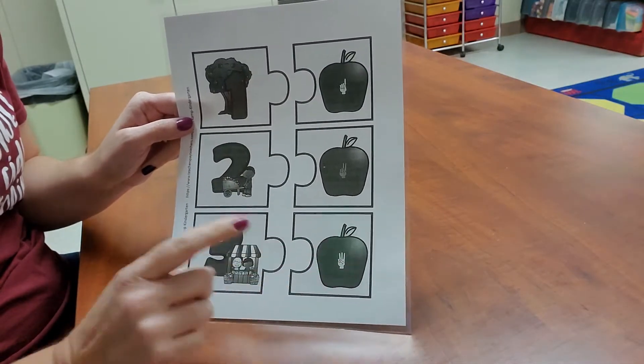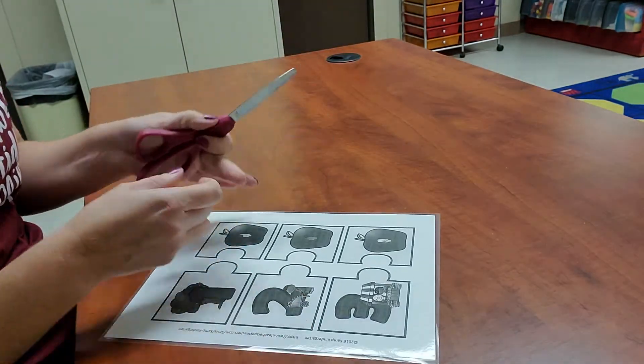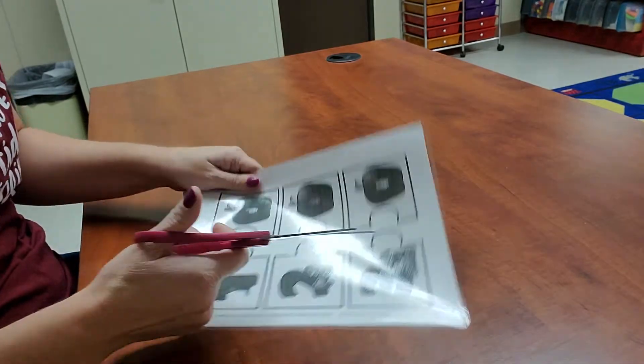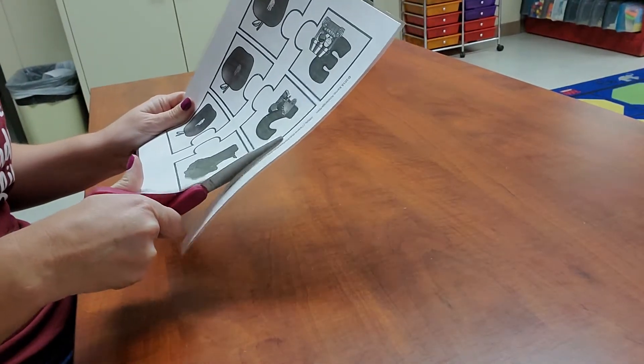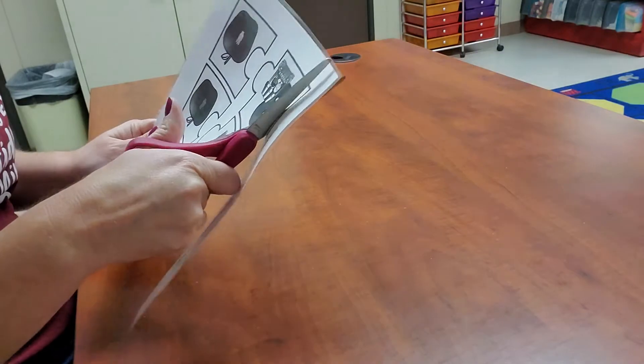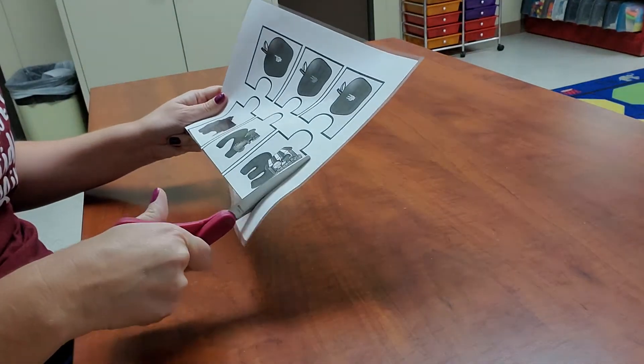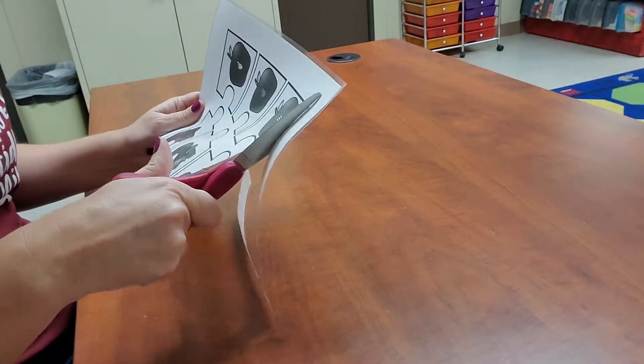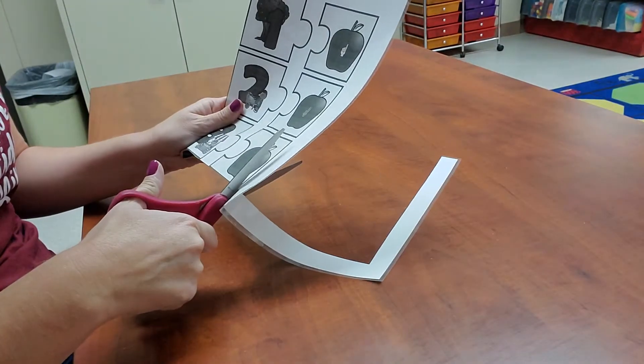So the first thing I need you or the parent to do is to cut out the puzzle pieces. You're going to cut right on the line. Cut on the line. Take your time and do it nice so that you don't cut off something you're not supposed to.